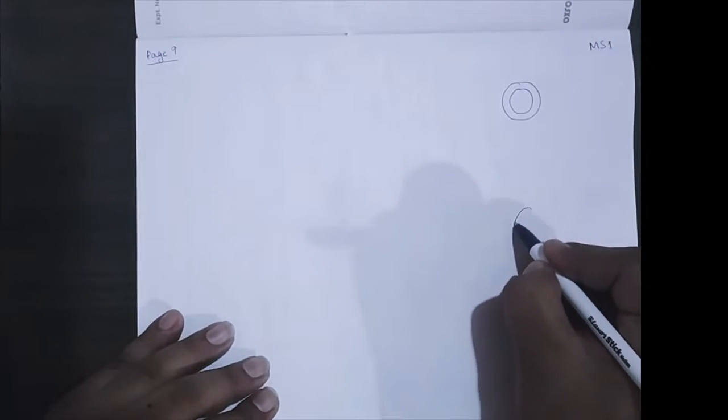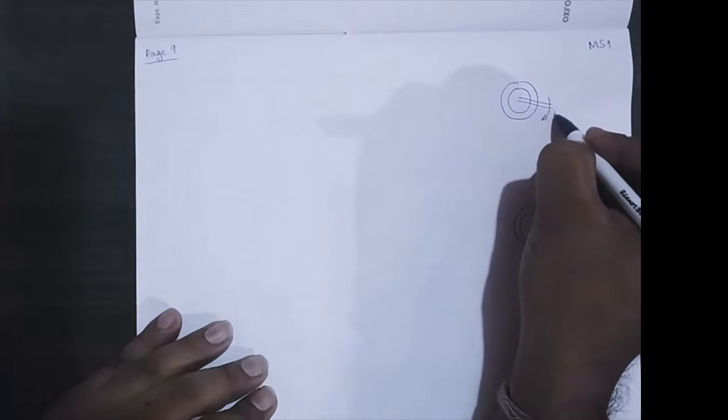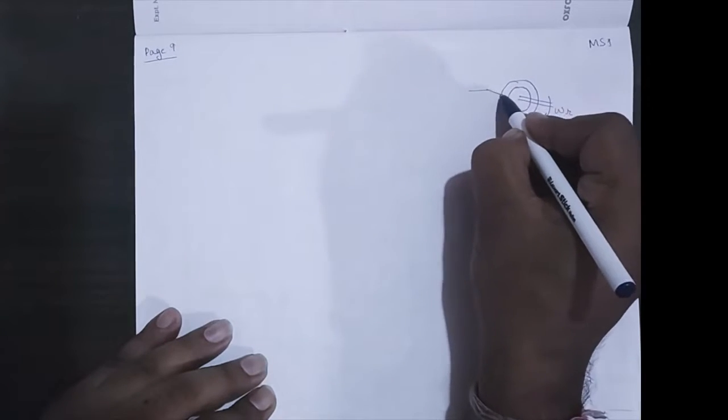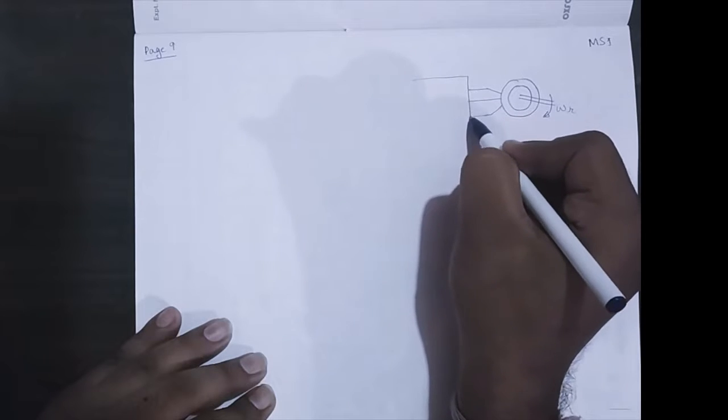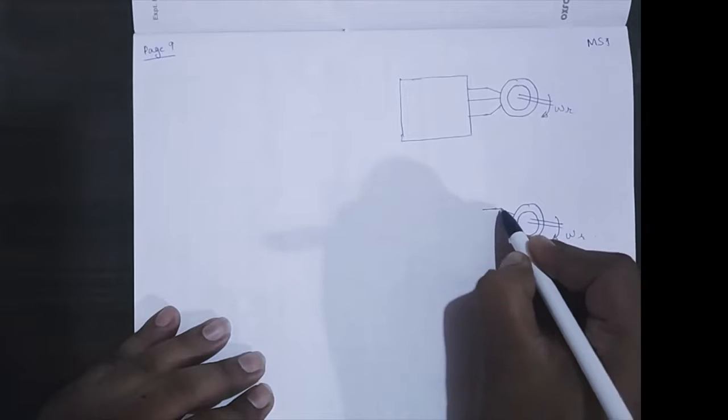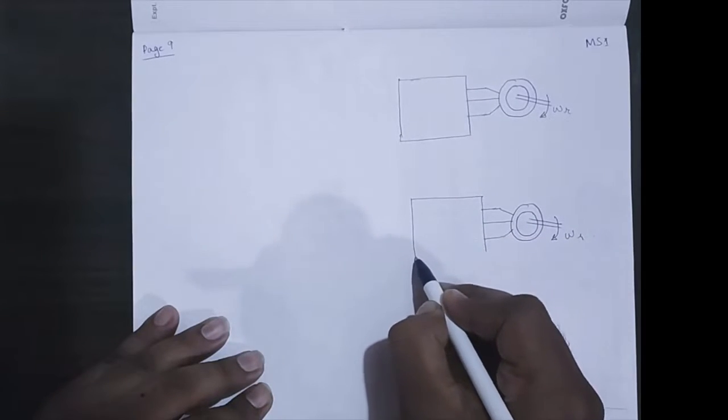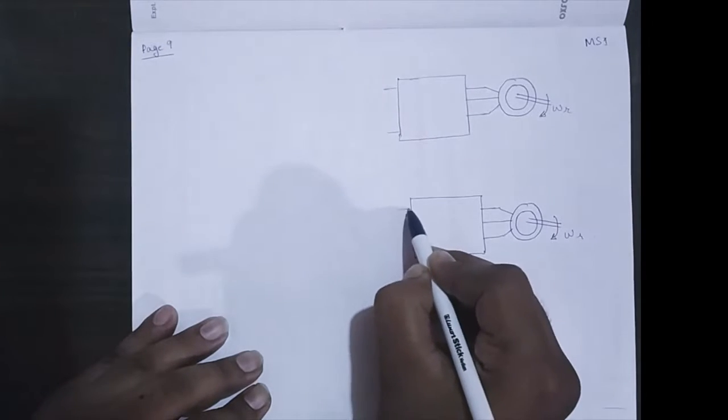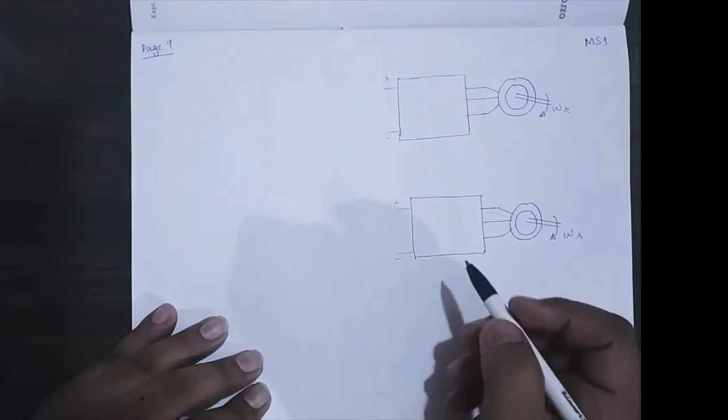So let us consider the difference between VSI and CSI. This is the motor terminal and this is the inverter. We are considering two cases to understand the difference between VSI and CSI. This inverter, there will be DC at this point.